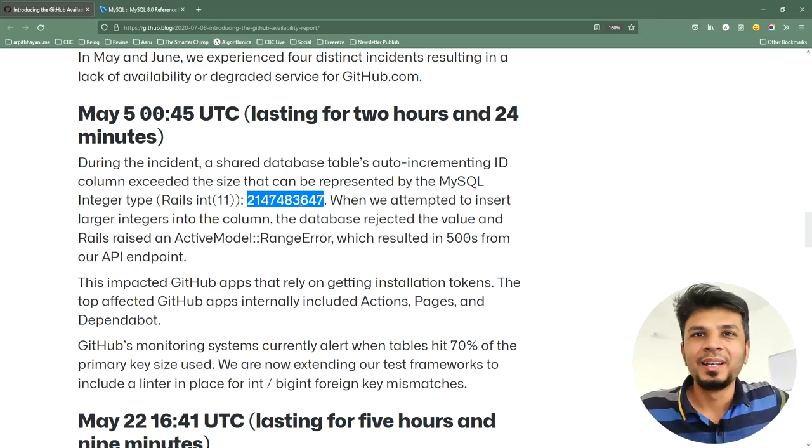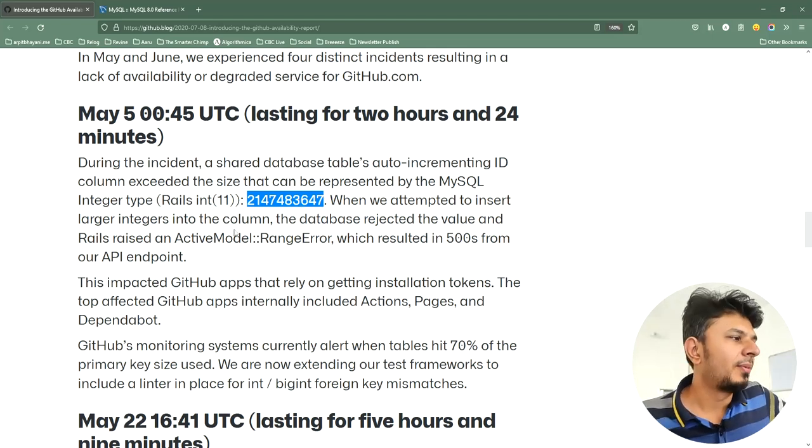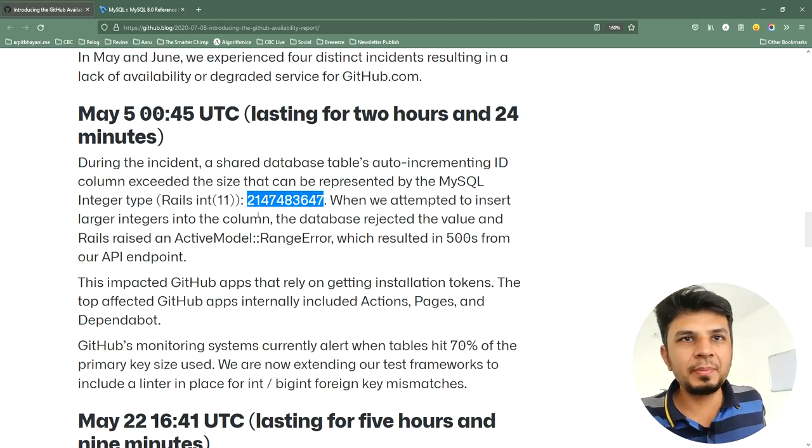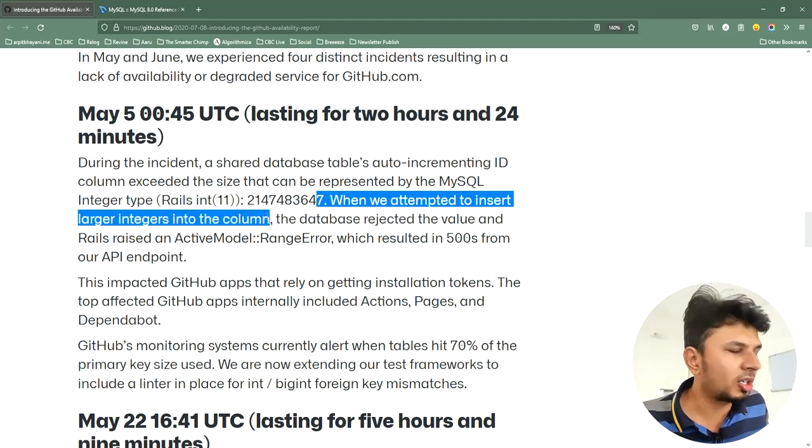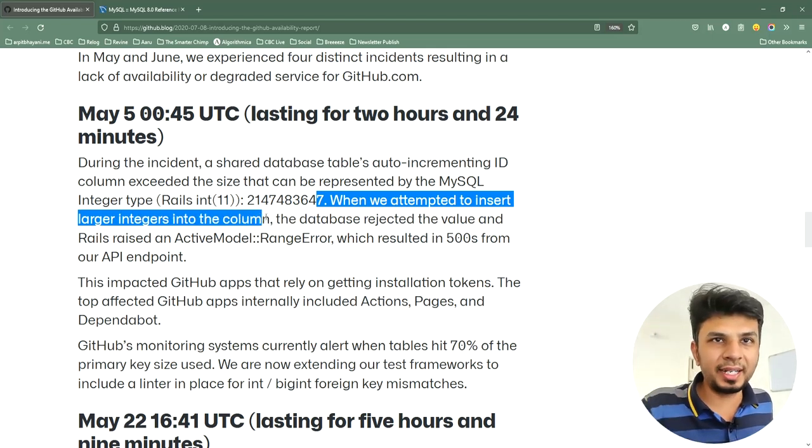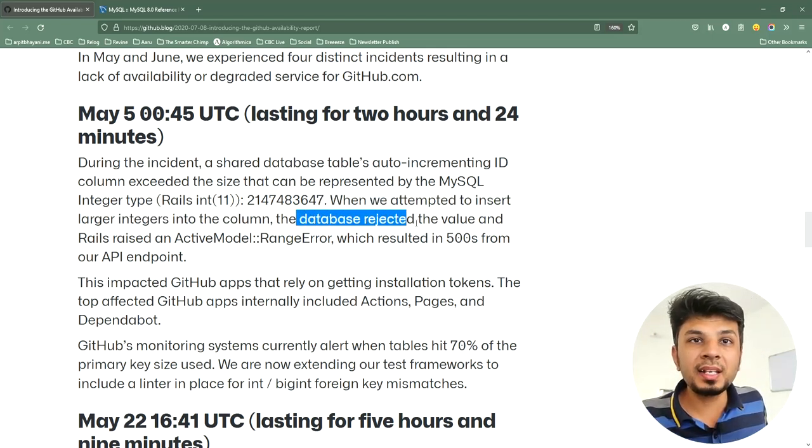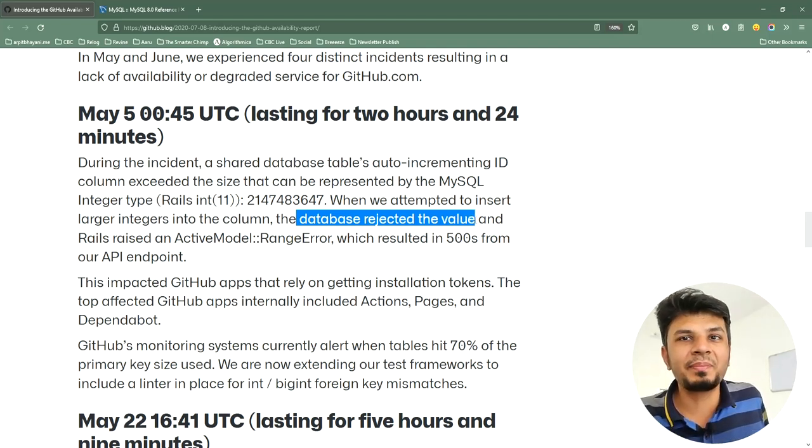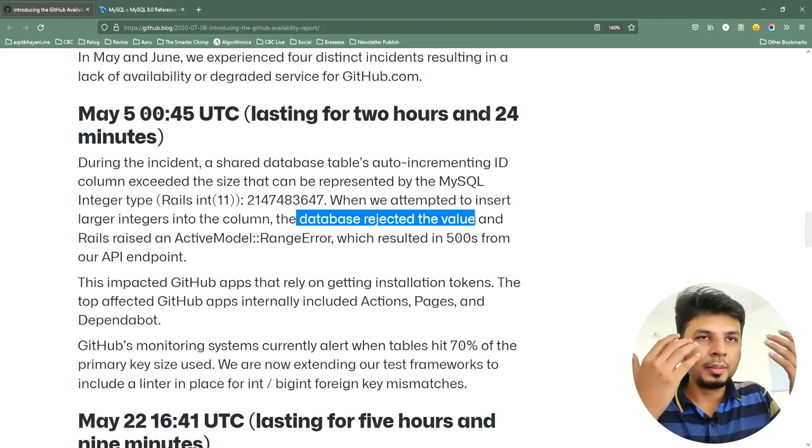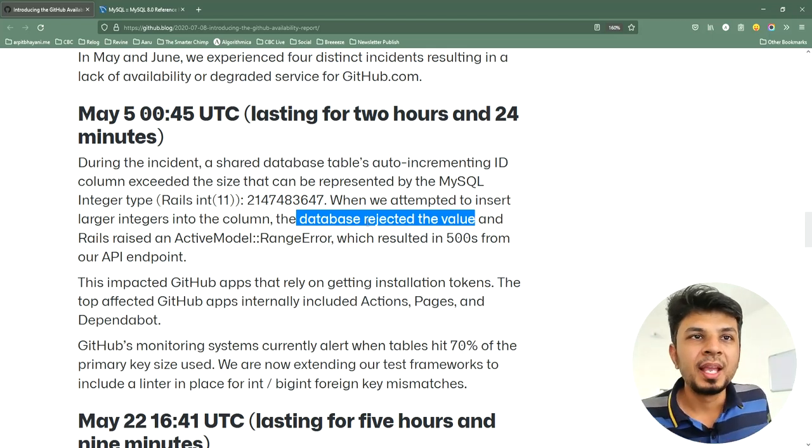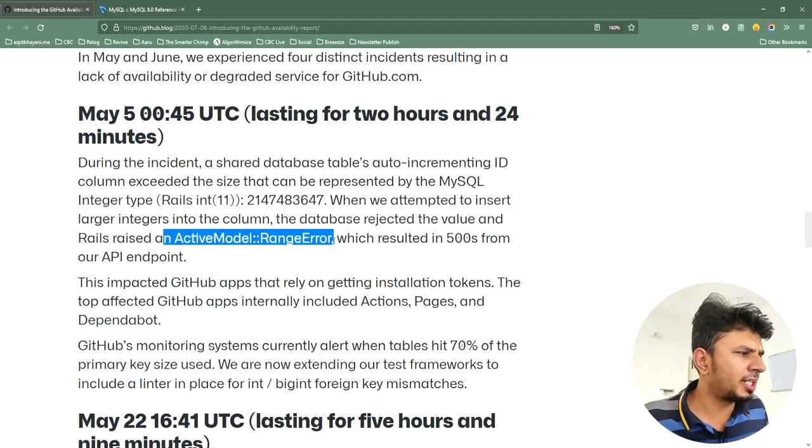So like normal integer overflow, 2 raised to 31 minus 1 is where this auto-increment ID stopped working. So when the column reached this limit, they attempted to insert large integers in the column. So they were trying to insert data, but the database rejected the value. Obviously database would not say hey, because integer type is fixed width, it cannot add more into it.